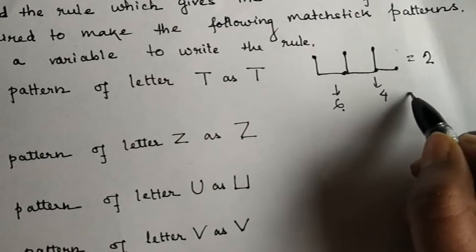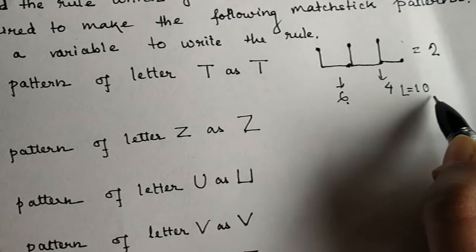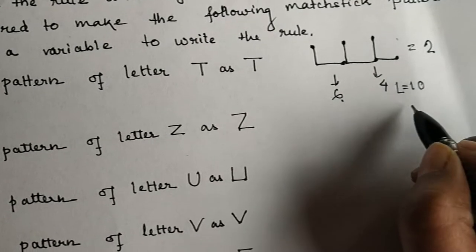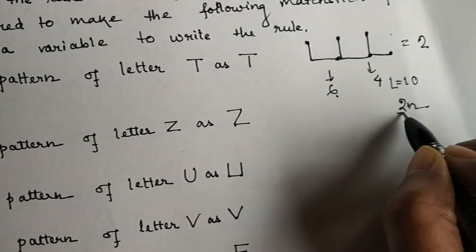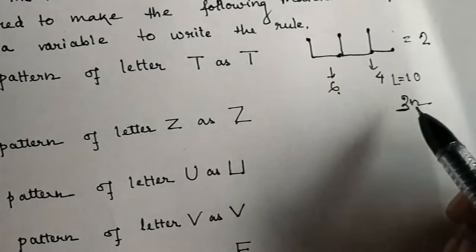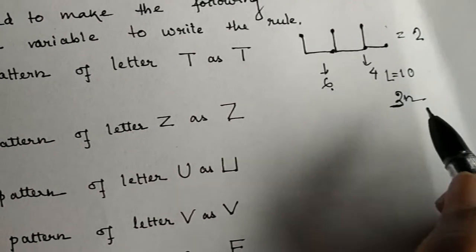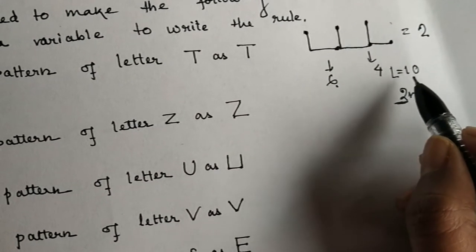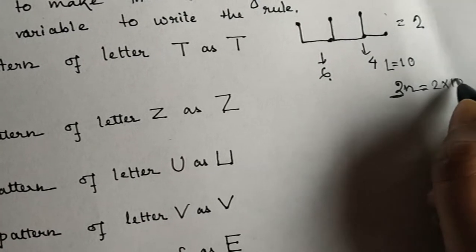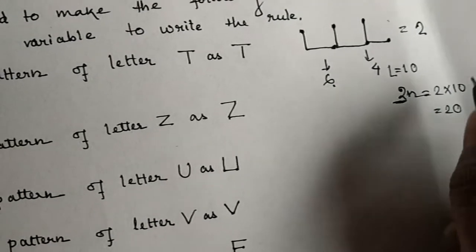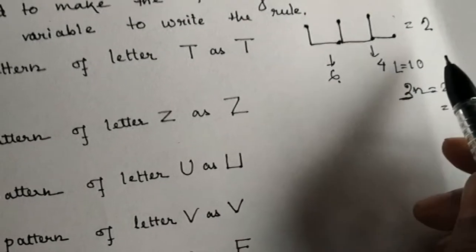Now, suppose if there are 10 L's — if the number of L is N, then the rule will be 2 into N. Here, 2 is the number of mastics required in one alphabet and N is the number of L's. If there are 10 L's, then 2 into 10 equals 20. So 20 mastics are used in 10 L's.